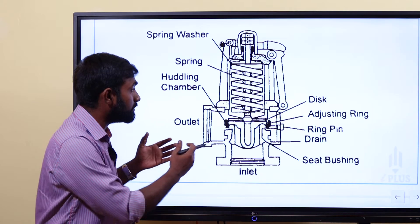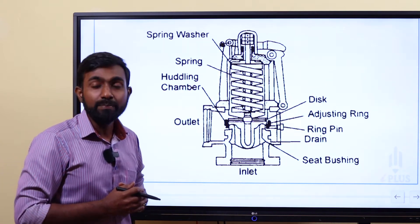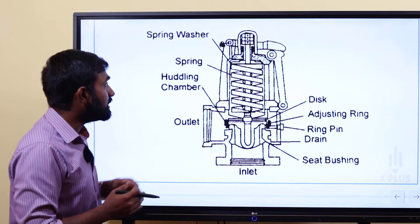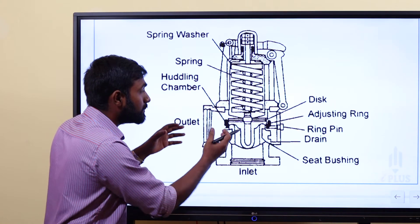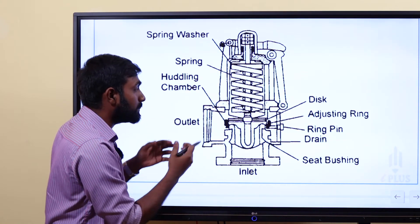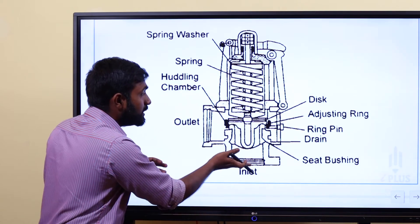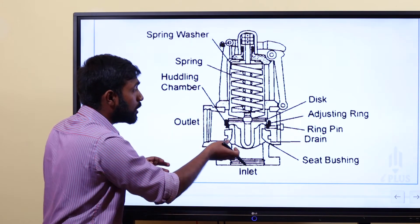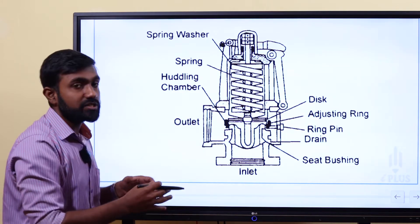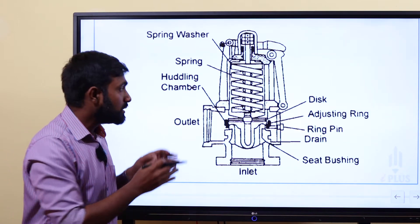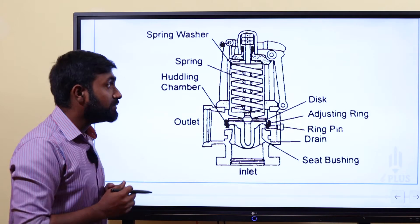The pressure relief valve is also known as a safety valve. In the figure, there is a spring arrangement. When pressure builds at the bottom of the water line, a disc moves upward and the spring compresses, relieving the high pressure from the line.